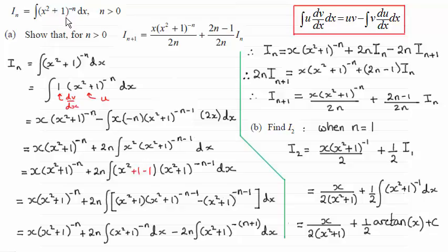So I've then got I_n equals x(x² + 1)^(-n) plus 2n I_n. I_n is this integral here. And then we've got minus 2n, and this integral here is I_(n+1). And then from that, I can rearrange this.